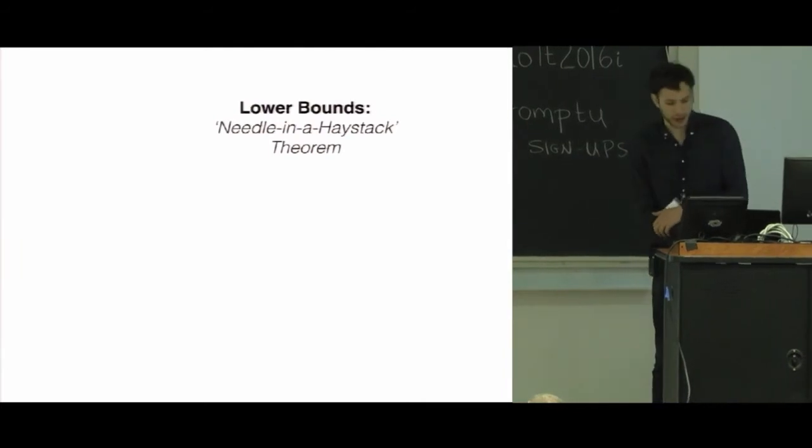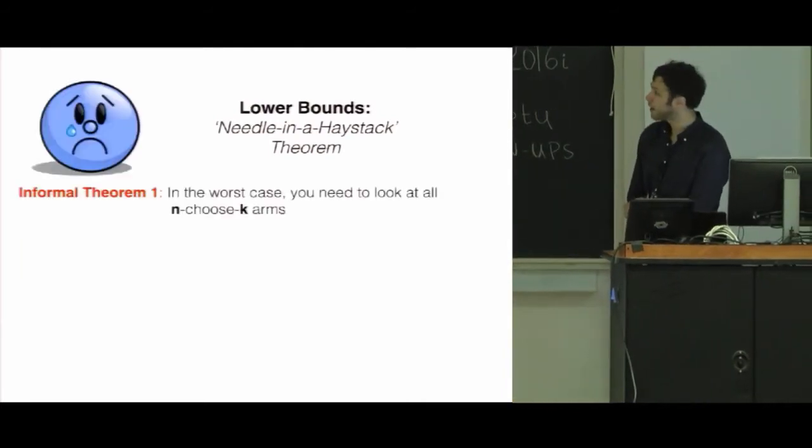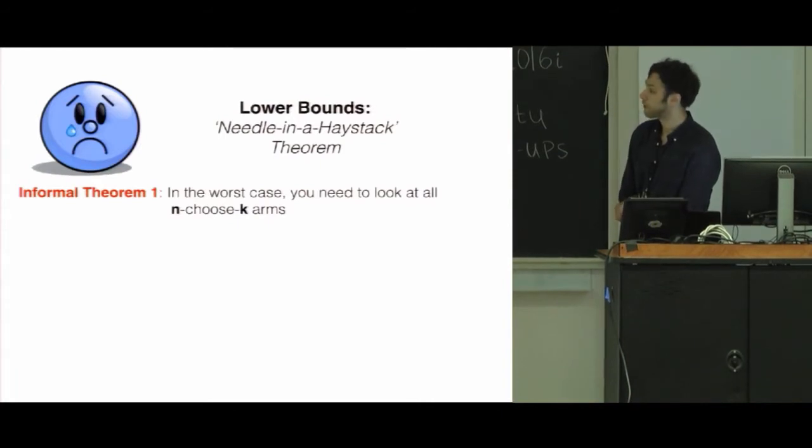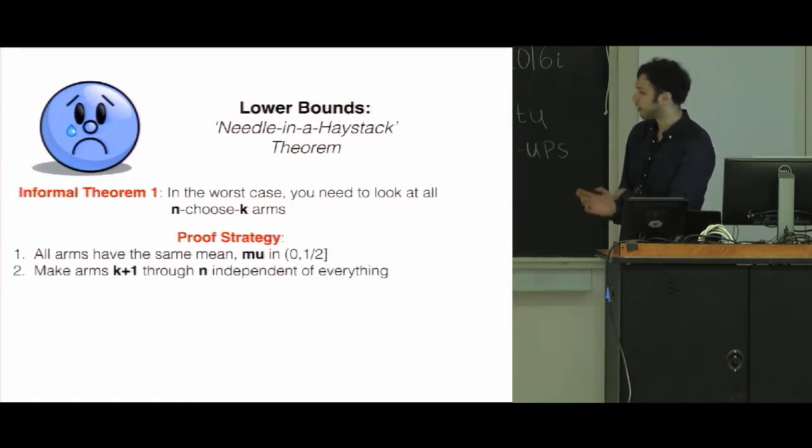Unfortunately, this problem in the worst case is very hard. Our informal theorem is that you need to look at all n choose k arms. Briefly, the way you do it is you take all arms to have the same mean, mu. You make the last arms, k plus 1 through n, independent of absolutely everything.